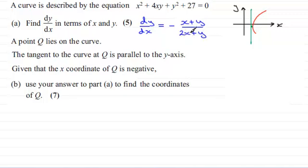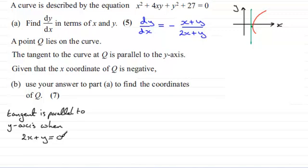So that's the key to this problem: it's when this denominator here, 2x plus y, equals zero. So I'm just going to lead in with this: the tangent is parallel to the y-axis when 2x plus y equals zero. And rearranging this we'd have y equals minus 2x.